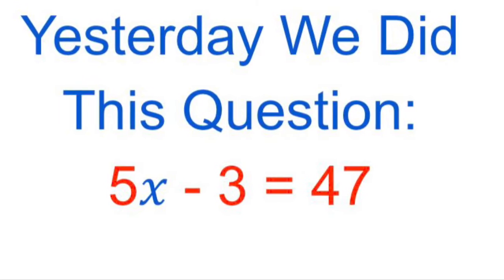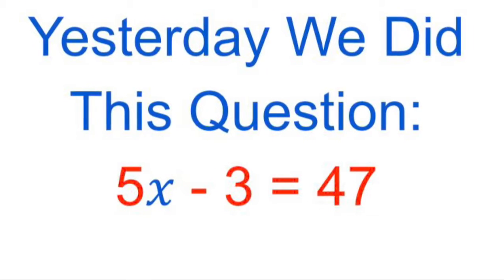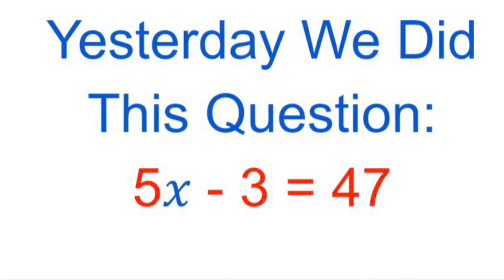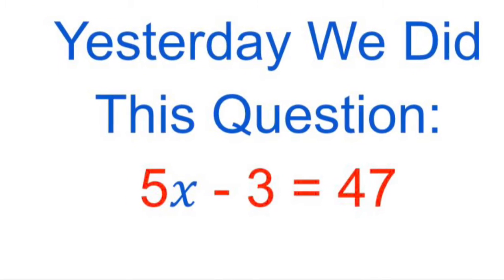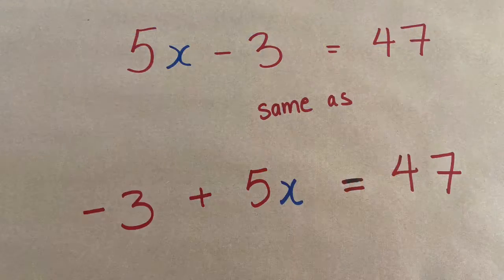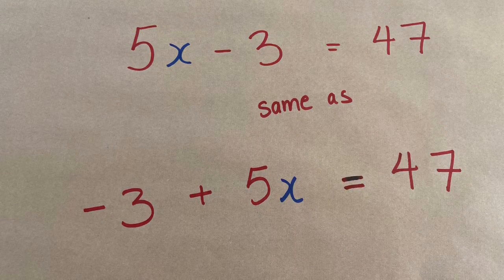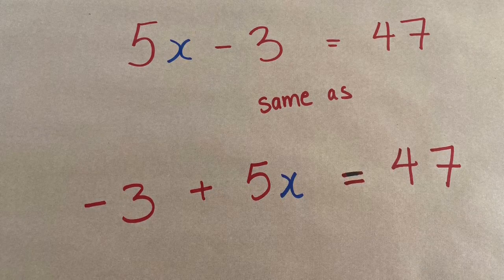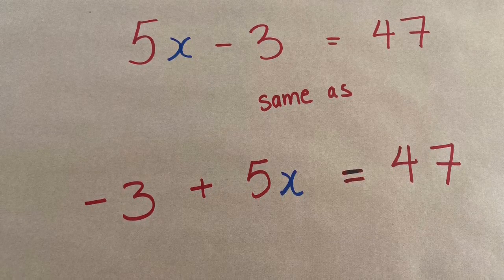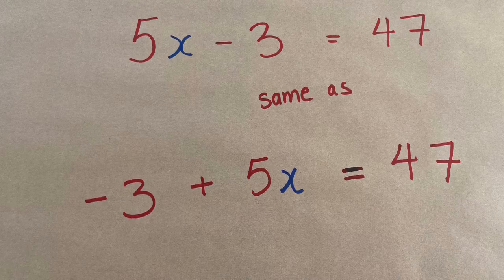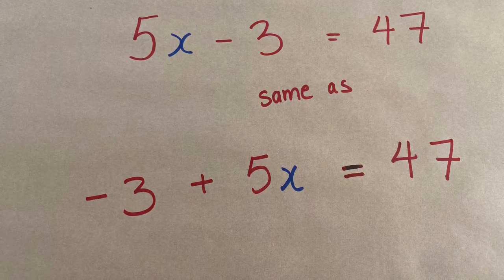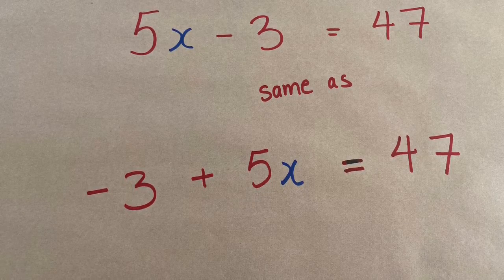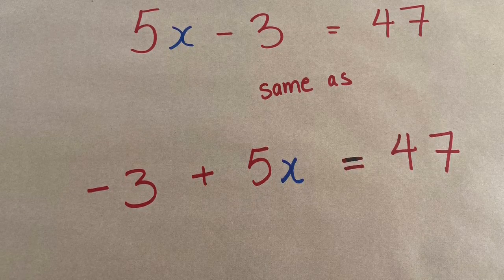We had 5x minus 3 is equal to 47. That means we had x, we multiplied by 5, we subtracted 3 to get 47, and we wanted to undo that to find the x. What I want you to notice is that 5x minus 3 is equal to 47 is actually the same thing as negative 3 plus 5x is equal to 47. It doesn't matter whether you write the subtraction part at the beginning or put it second. It's the same equation.